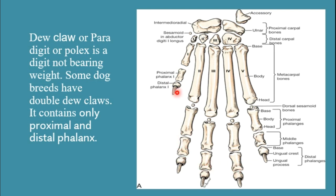In some breeds of dog there are also 2 dewclaws within the same paw, so it varies from breed to breed. Names of the phalanges present in a digit are based upon their location within the digit. We have the first phalanx, also known as proximal phalanx. Then we have middle phalanx or second phalanx, and at last we have third phalanx or distal phalanx. There are three phalanges in the second, third, fourth, and fifth digit, while in the first digit there are only two phalanges: proximal phalanx and distal phalanx.